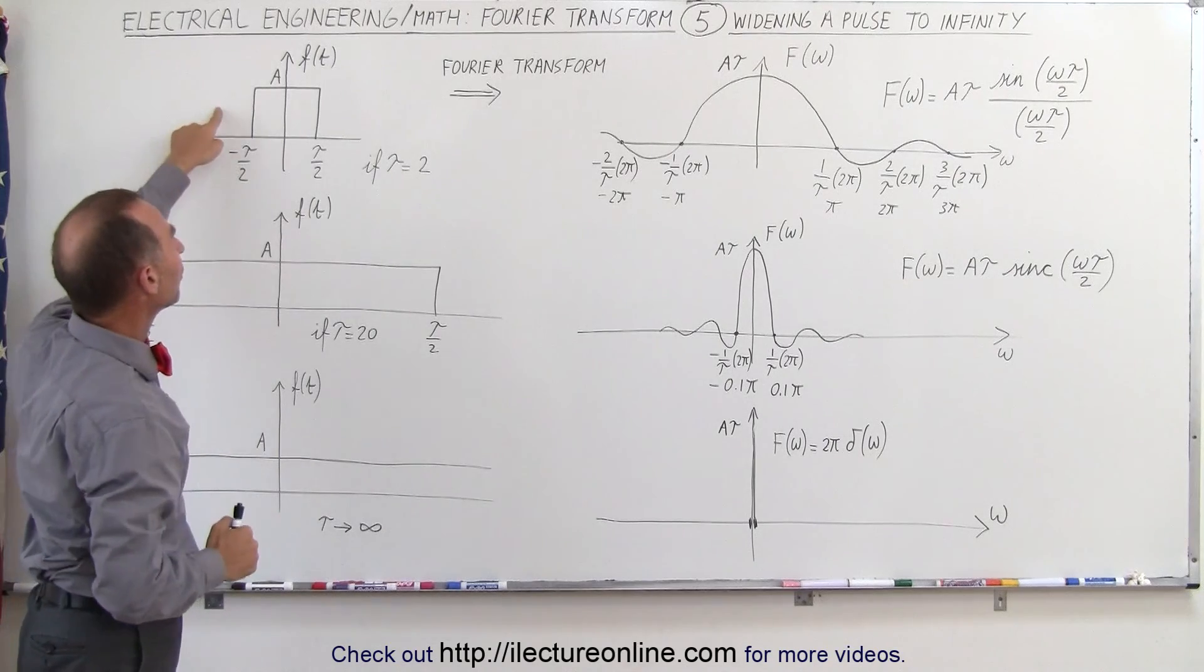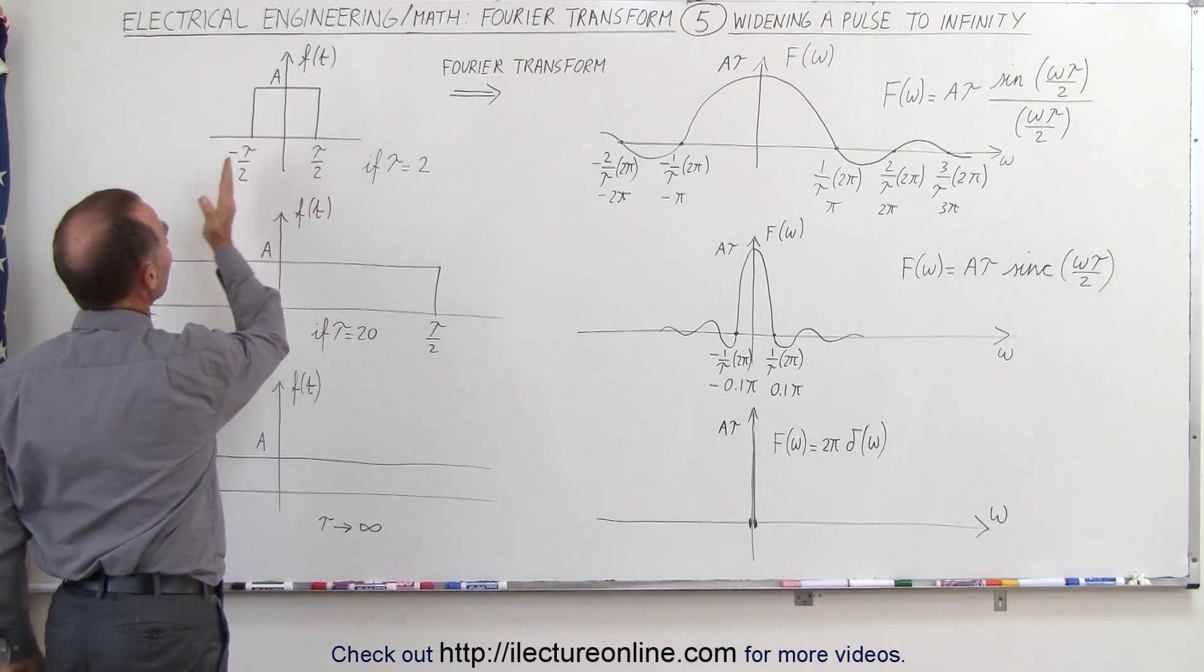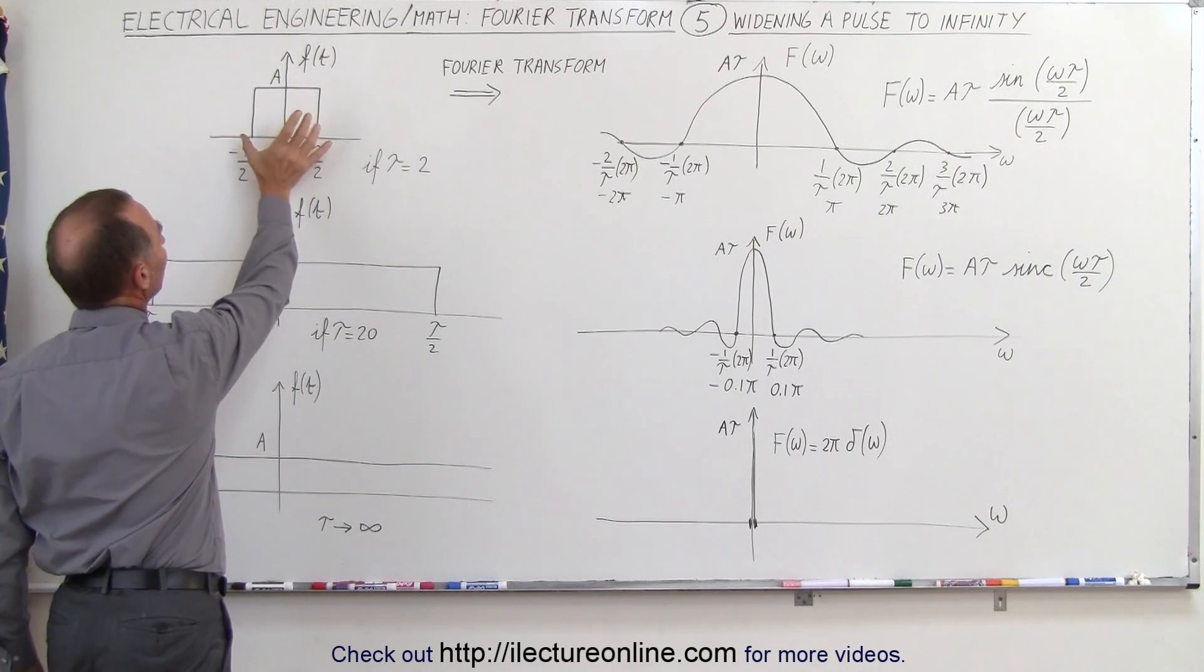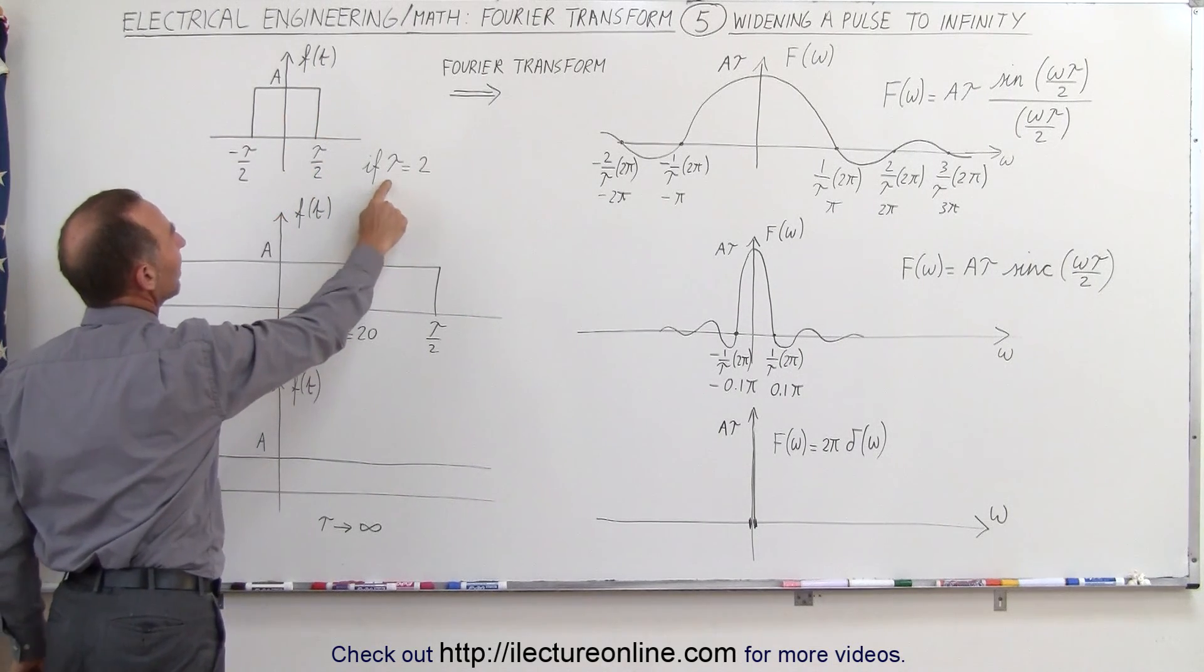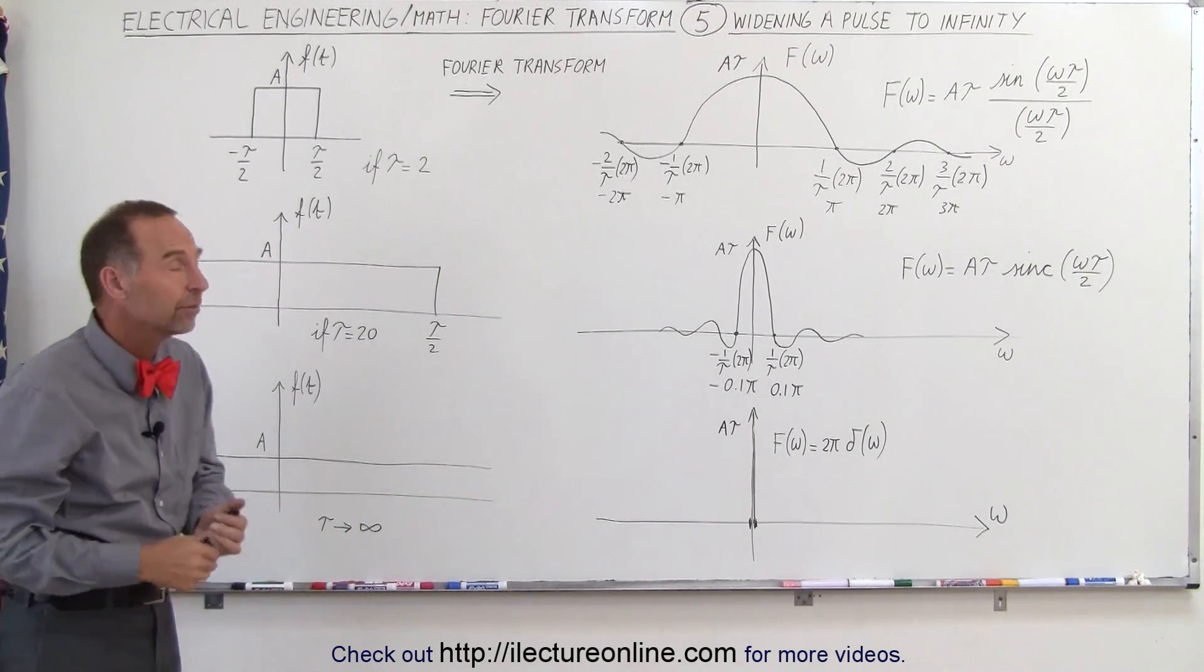Notice that the pulse is in the time domain, and the width of the pulse goes from minus tau over 2 to tau over 2, so tau is actually the width of the pulse. Let's say that tau is equal to 2. It could be 2 seconds, 2 milliseconds, whatever it is.